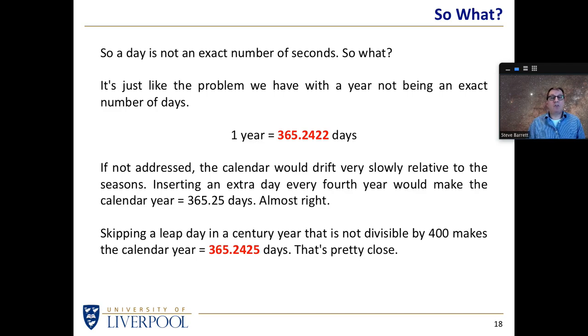Because if we obey that particular rule for adding leap days, then the length of the calendar year becomes 365.2425 days. And that is very close to the true length of a year. That's pretty damn close. And it's close enough that if we have this rule for when we include leap days, that keeps the calendar in sync with the seasons for thousands and thousands of years into the future.